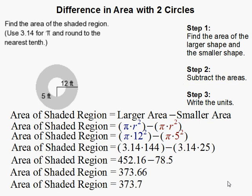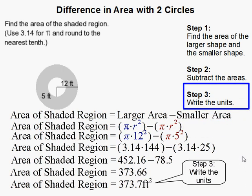And lastly, it is an area problem, so don't forget to write the units. In this example, the units are in feet, so you have to write feet squared. Remember, area always has to have squared units. And that completes our problem.